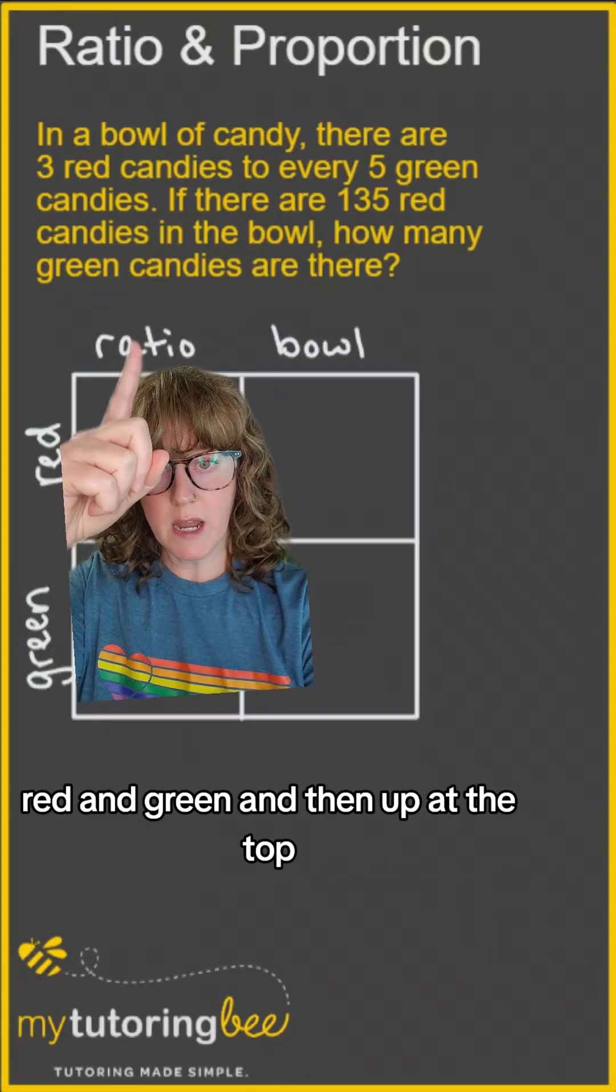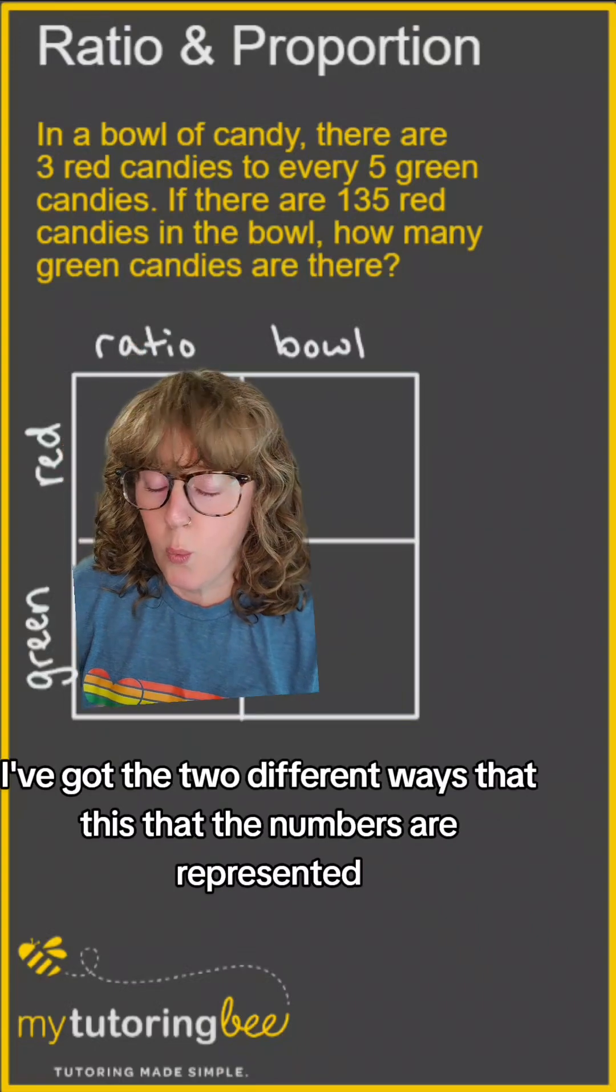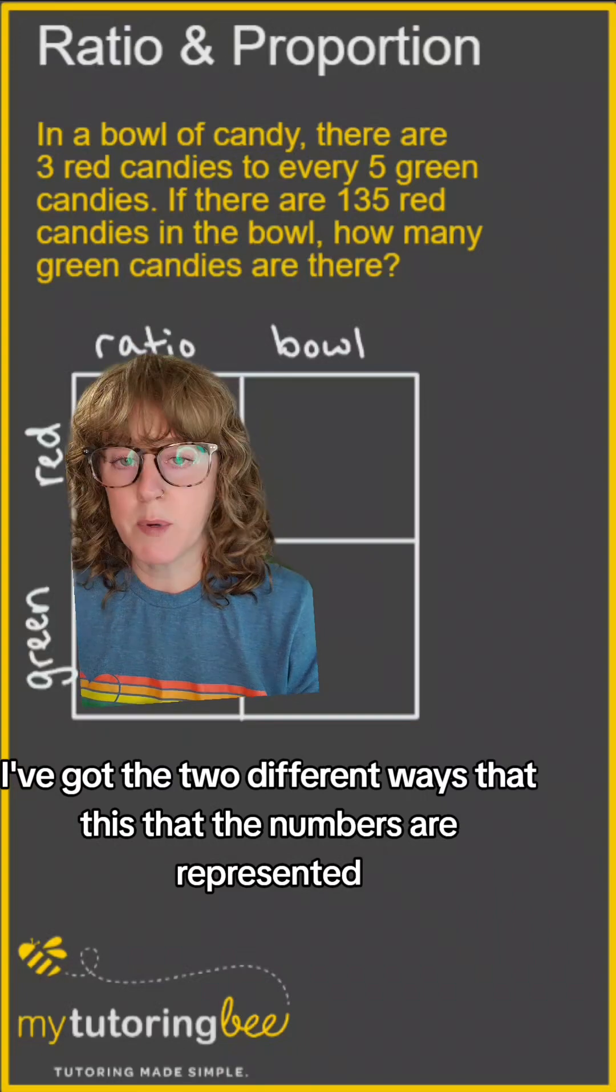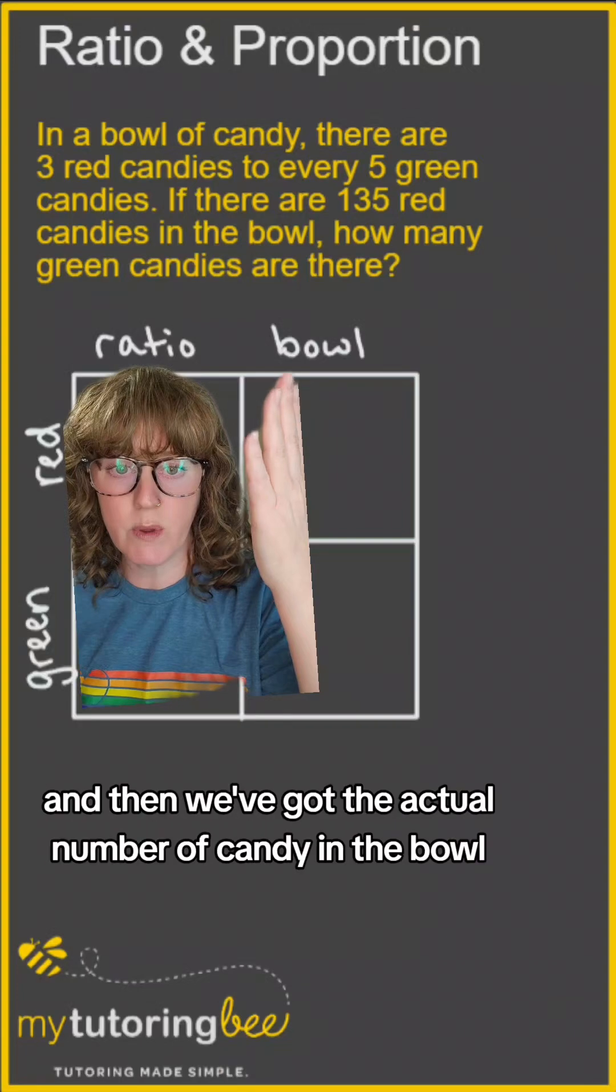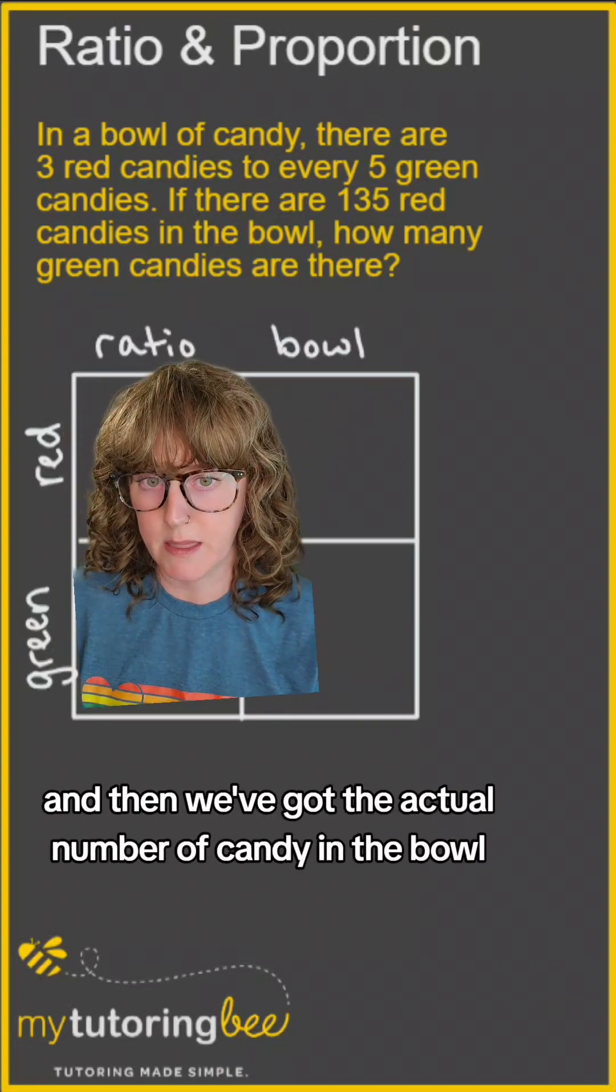and then up at the top, I've got the two different ways that the numbers are represented. We've got the ratio numbers, and then we've got the actual number of candy in the bowl.